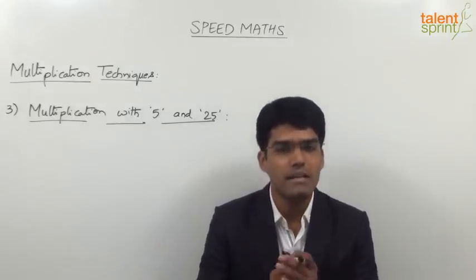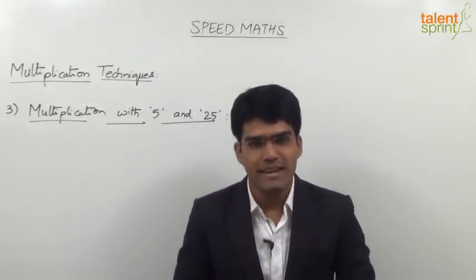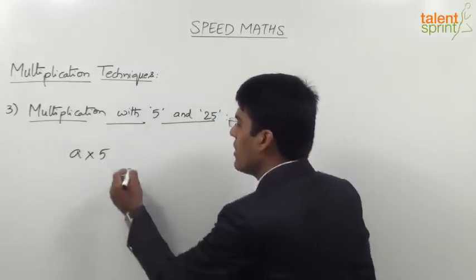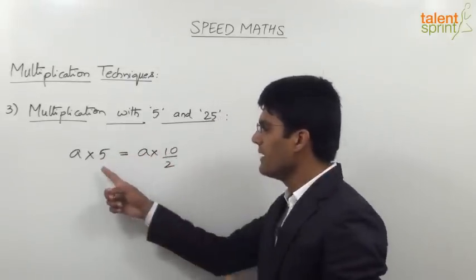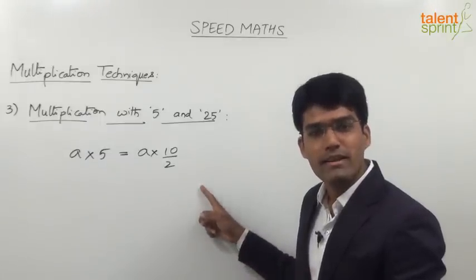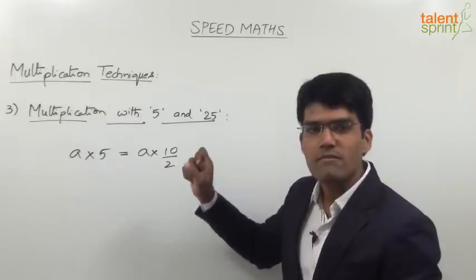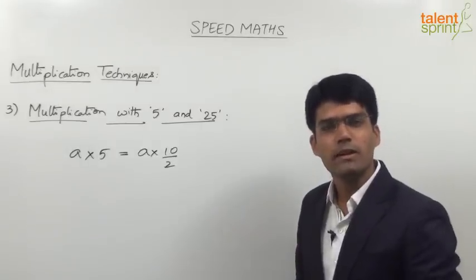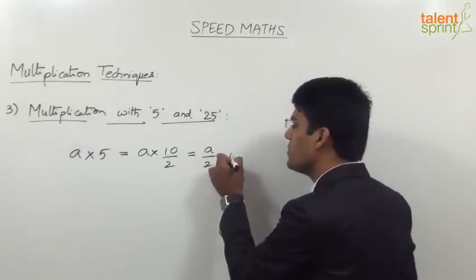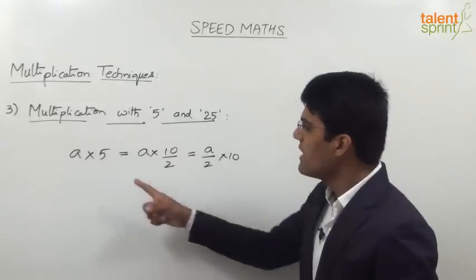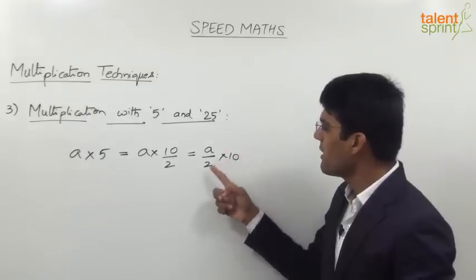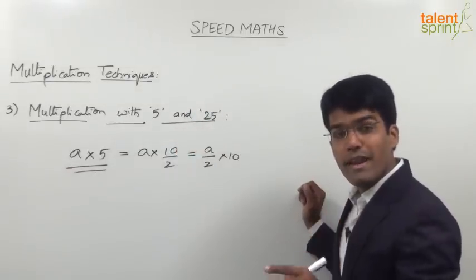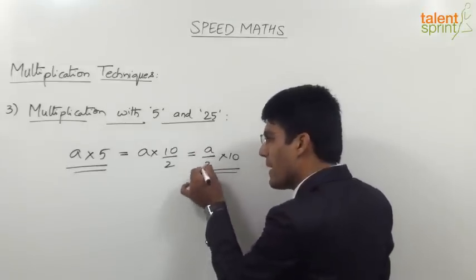Multiplication with 5 of any number is as simple as multiplying it with 2 or 4 or any easy number. Let us understand how we can multiply a large number with 5 in less than 1 second. Let us assume there is a number A which has to be multiplied with 5. Now, 5 can be taken as 10 divided by 2. So the point is we are changing the way we look at the number — 5 is not 5 for us, it is 10 by 2. So A into 5 is nothing but A by 2 into 10.